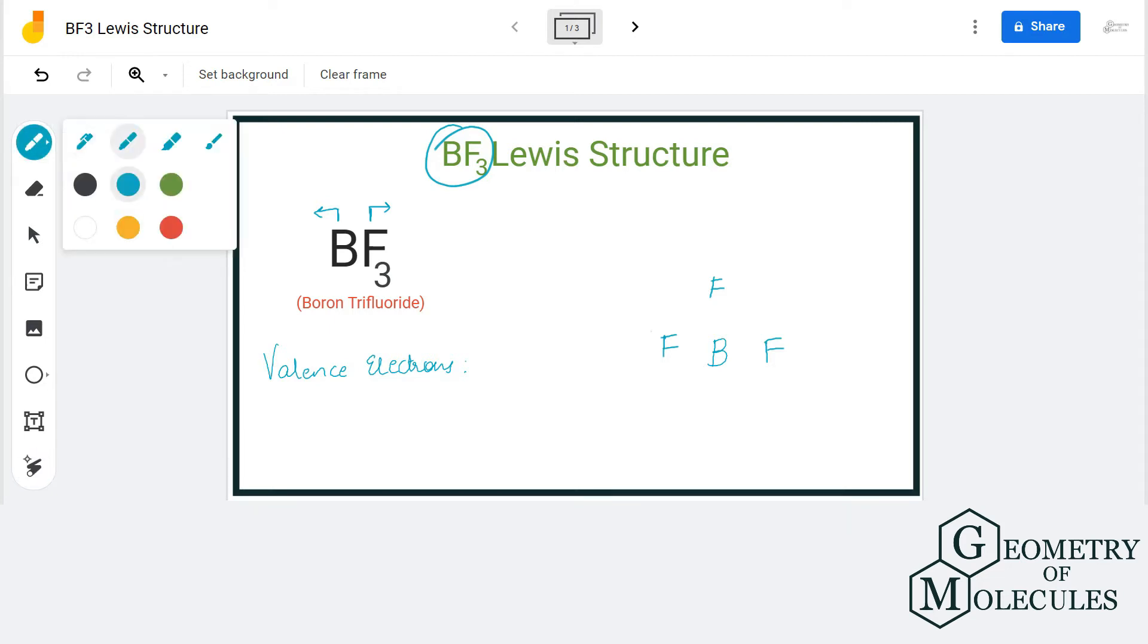Each fluorine atom has seven valence electrons. Since there are three fluorine atoms, we multiply this number by three. In total, we have 24 valence electrons for BF3. Now we'll place boron in the center because it is the least electronegative atom here.